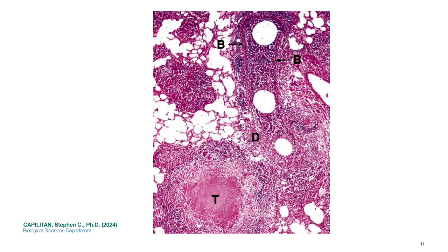This is tuberculous bronchopneumonia at medium power. In this early lesion, a bronchiole contains infected material; the walls of the bronchiole are indicated by arrows labeled B. A segment of the bronchiolar wall has been destroyed, labeled D, permitting access of the bacilli which have initiated a caseating tubercle labeled T in the nearby lung parenchyma. Large numbers of lesions may form, merging with one another to produce a wide area of rapidly enlarging caseation — usually seen in the lower lobes of the lungs. This is the pathogenesis of the once-dreaded galloping consumption.